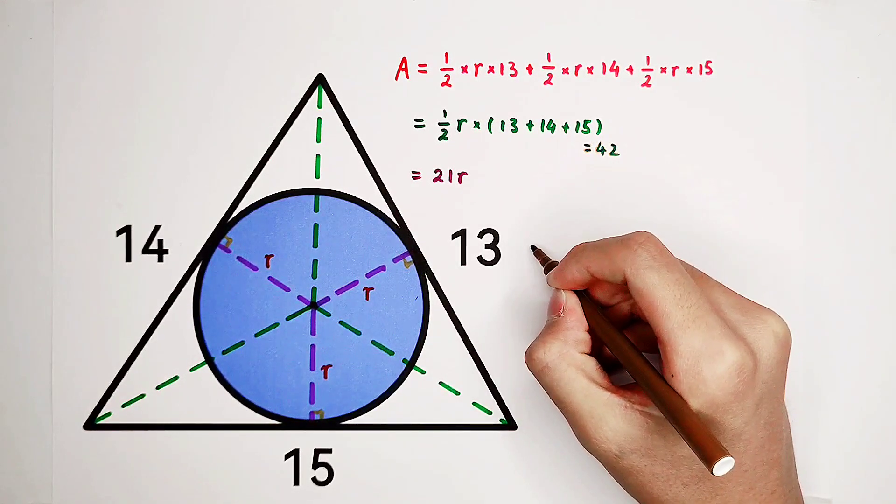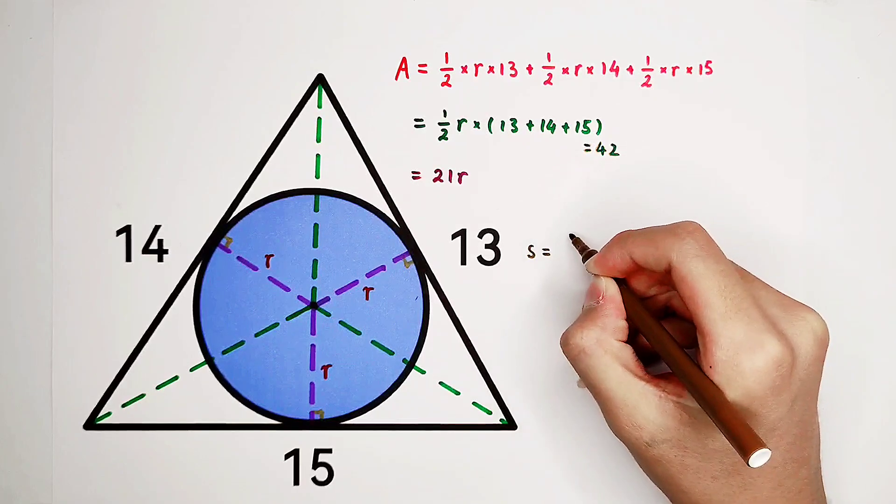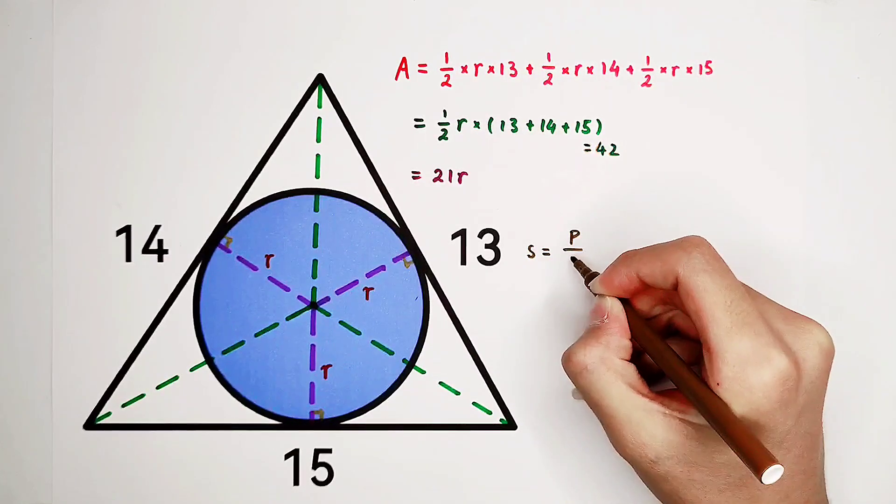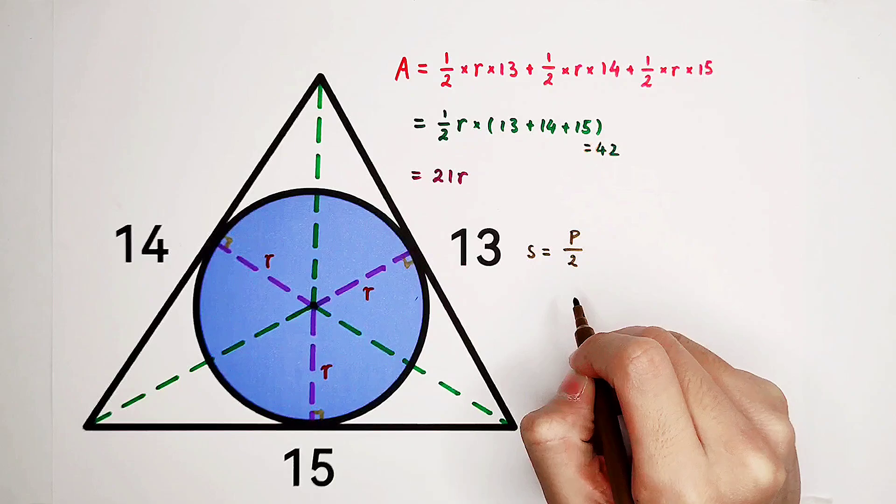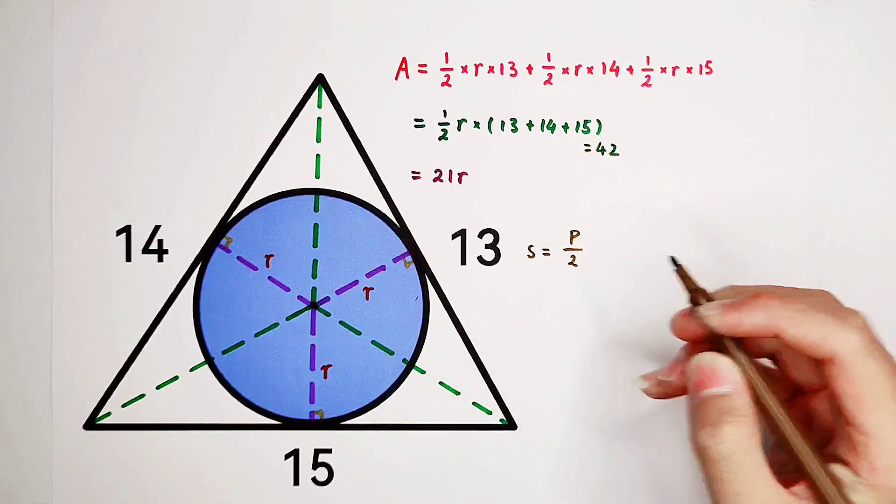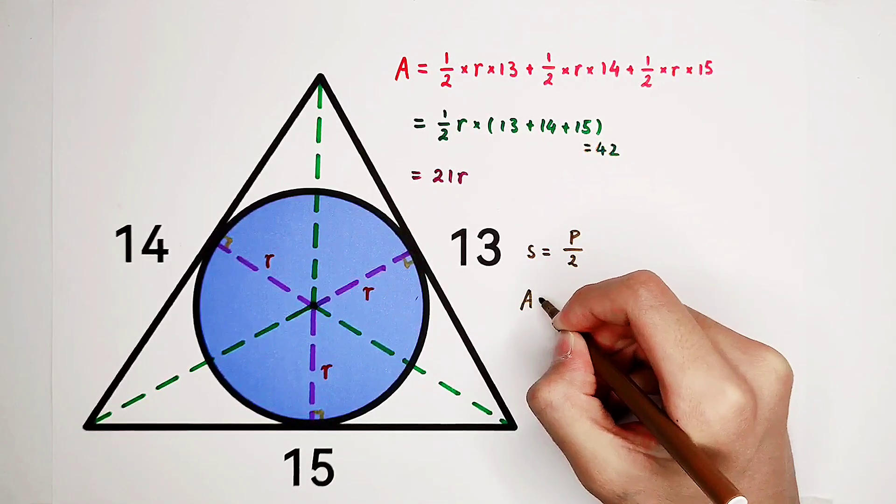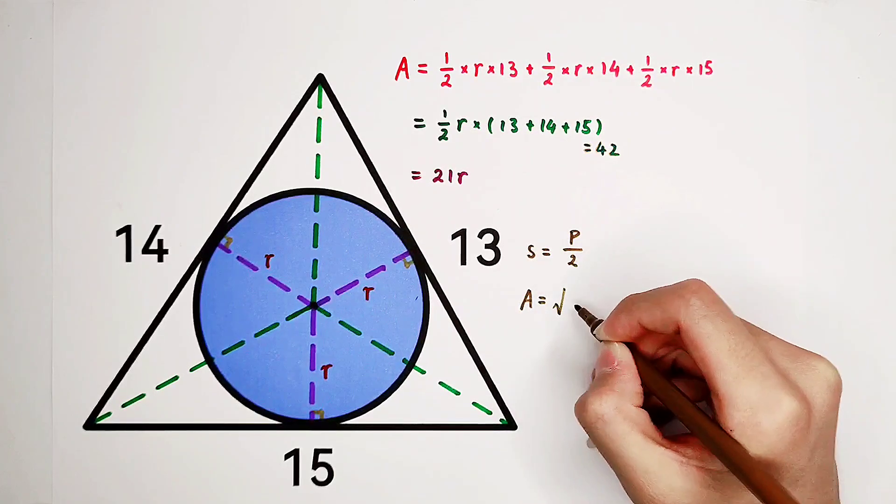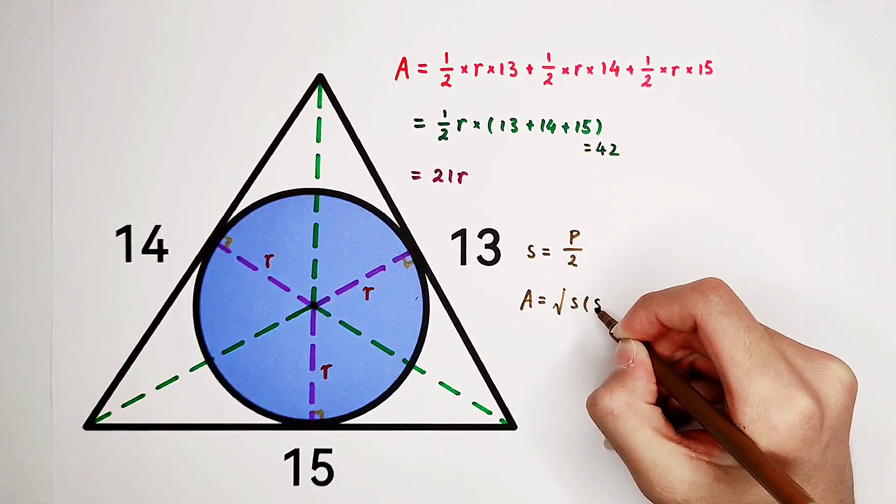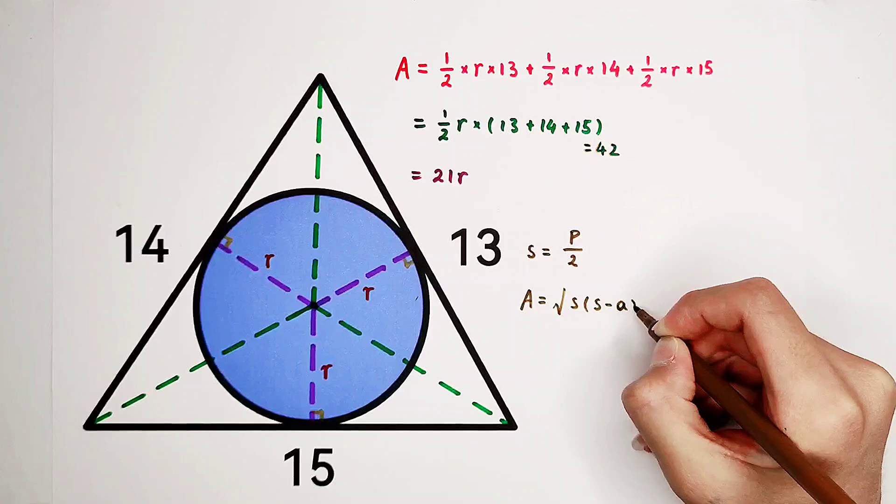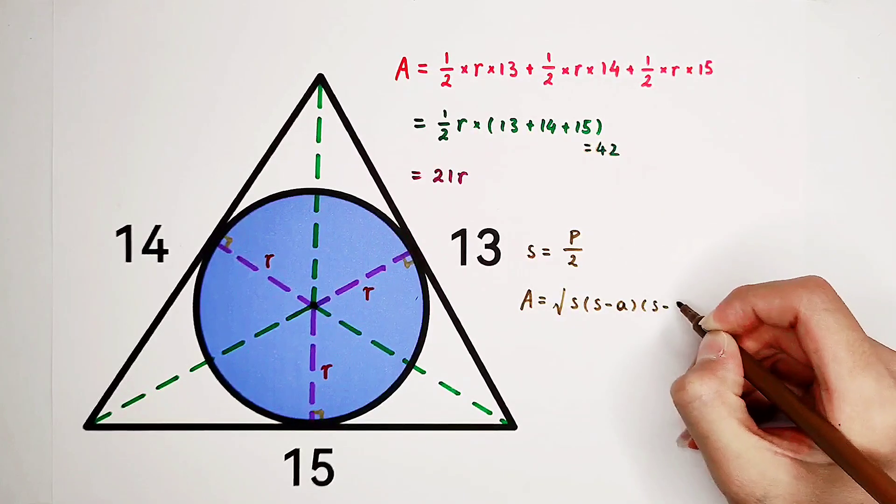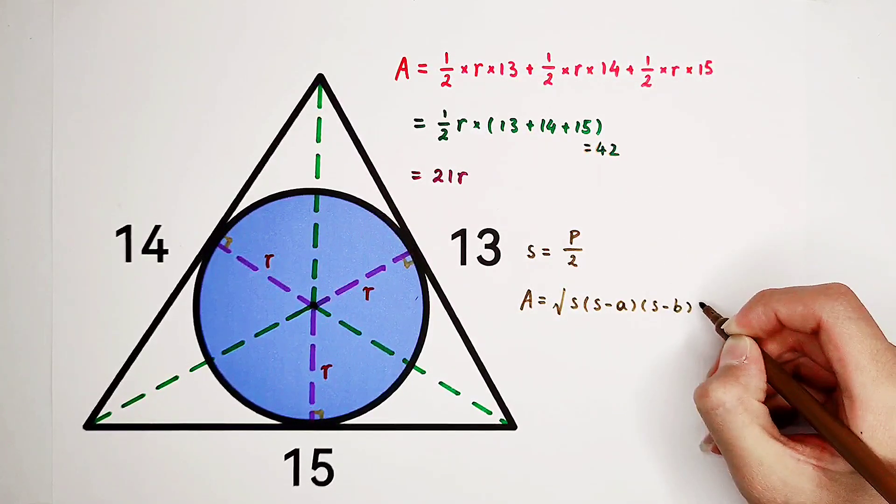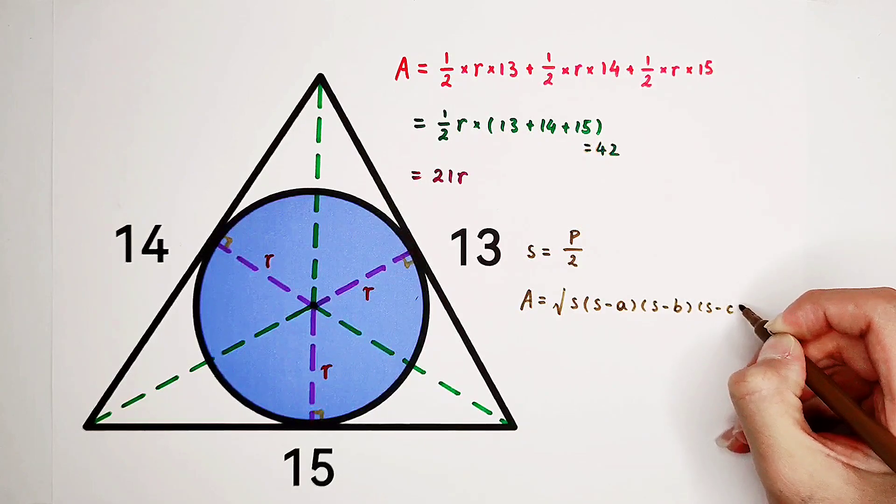If we note that S is equal to half of the perimeter of the triangle, then the area of the triangle will be equal to square root of S times S minus the first side, then times S minus the second side, then times S minus the third side.